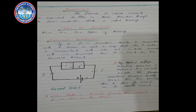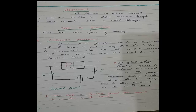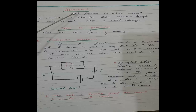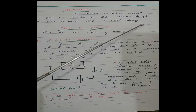Bismillah ar-Rahman ar-Rahim. Now our topic is Biasing, again from chapter number 16. These are small terminologies which are used. Biasing: the process in which current is required to flow in a desired direction through a semiconductor diode.